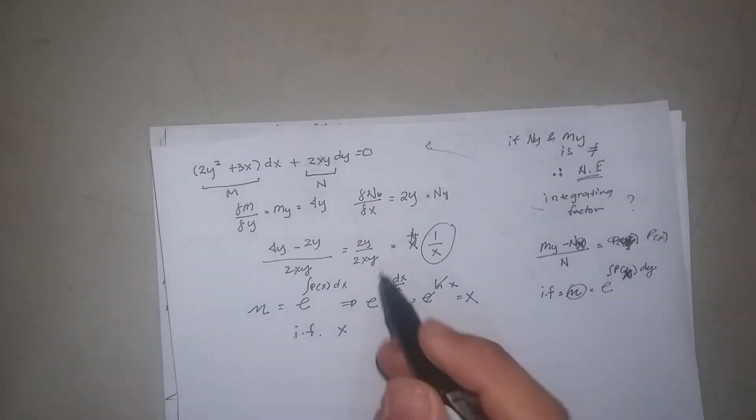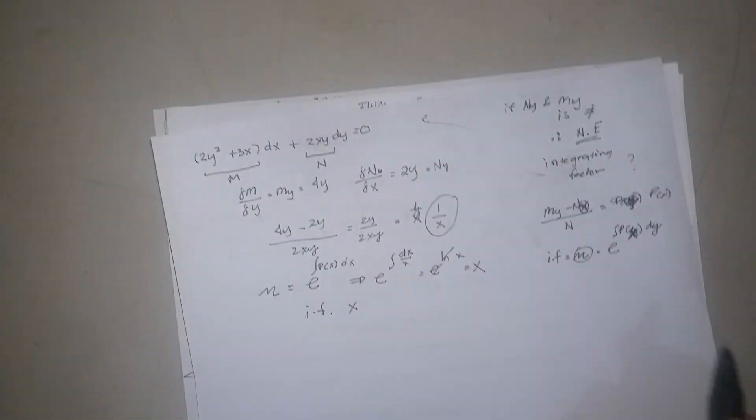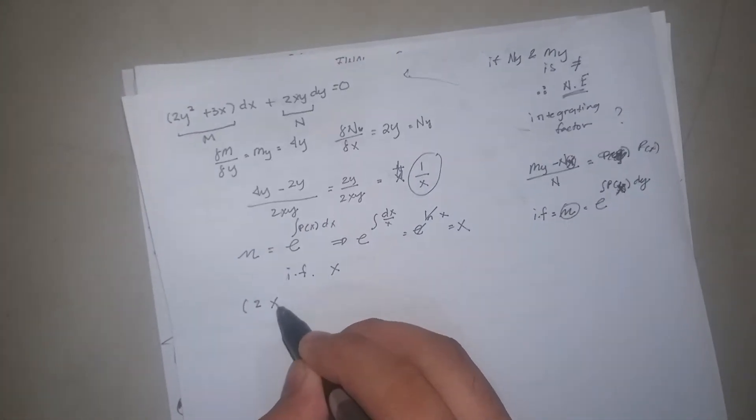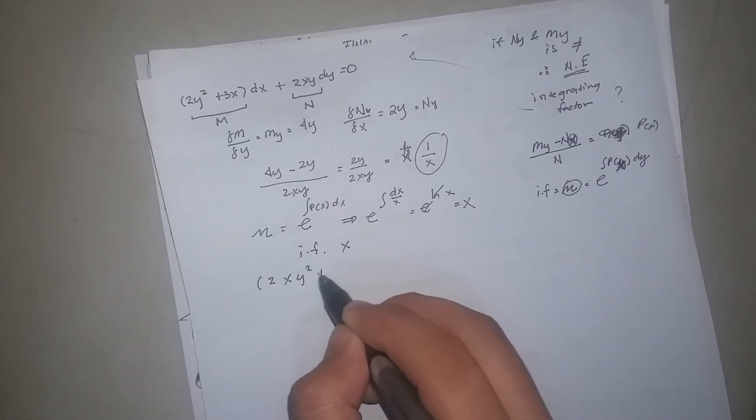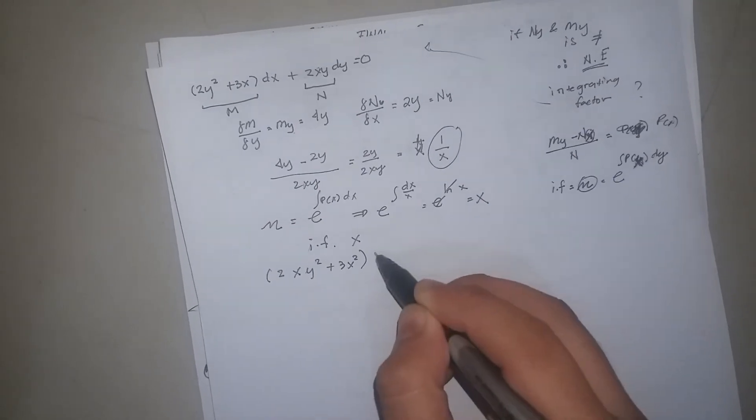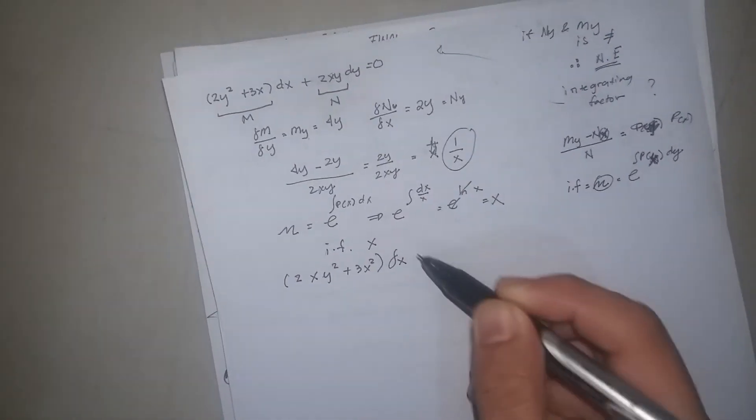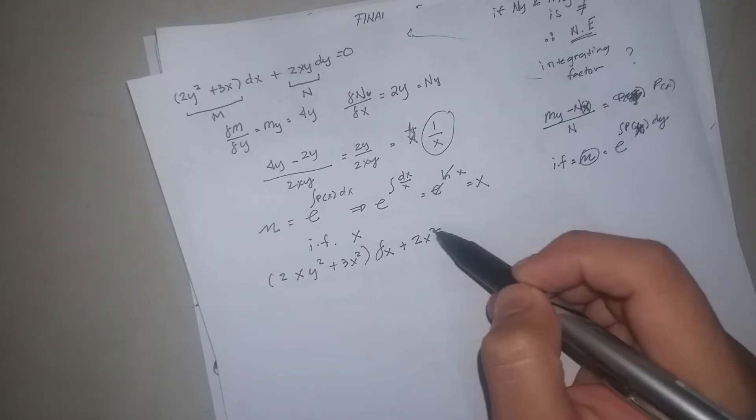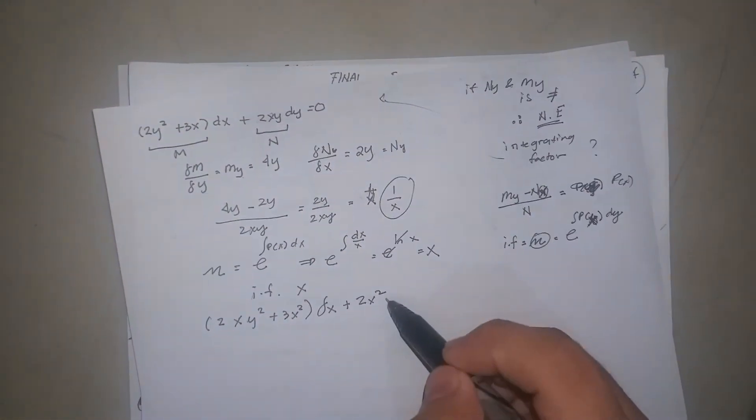And I'm gonna multiply this here, so we're gonna form 2xy squared plus 3x squared dx plus 2x squared y dy equals 0.